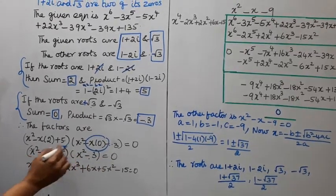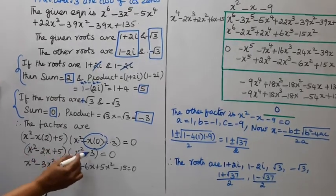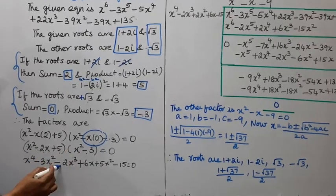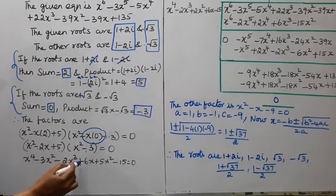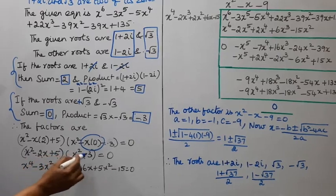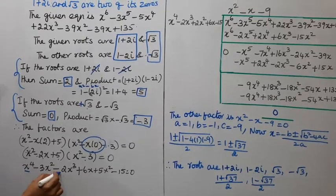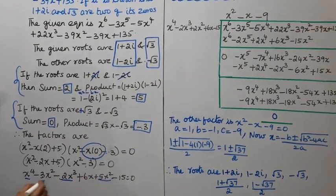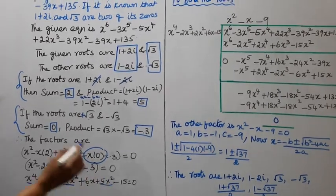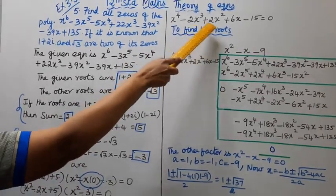The two quadratic factors are (x²-2x+5) and (x²-3). Multiplying them: x⁴ - 2x³ + 2x² + 6x - 15. This gives us a degree-4 factor from the four known roots.